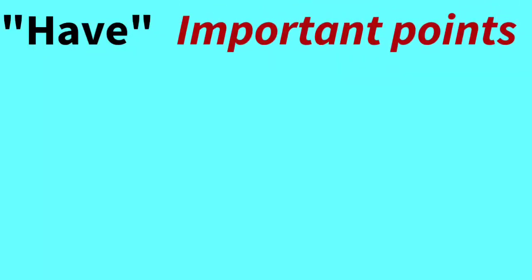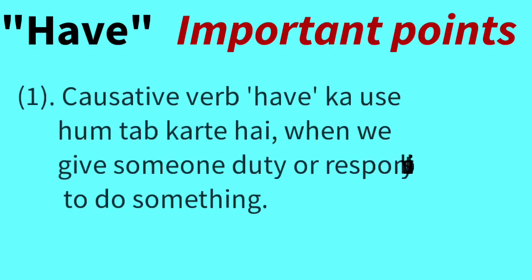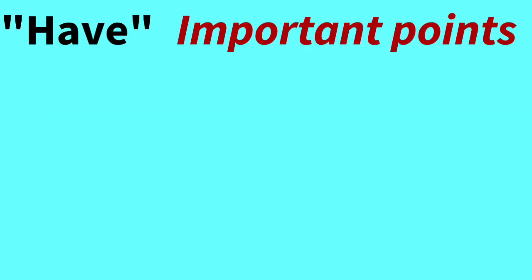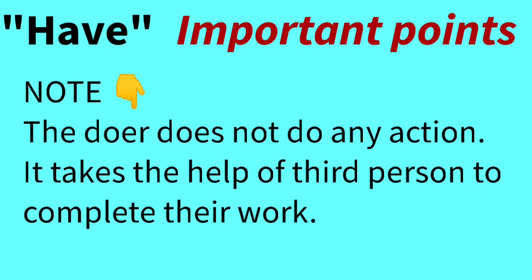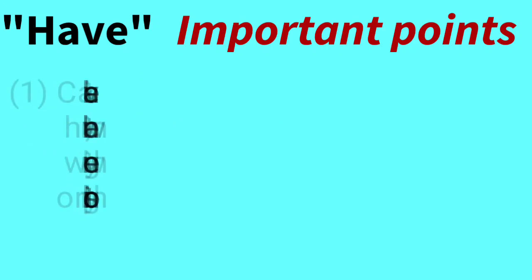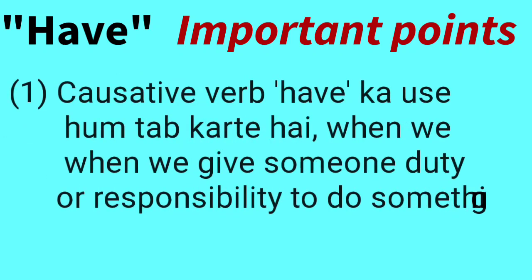There are some points that we will remember. The first point is: we use the causative verb 'have' when we give someone a duty or responsibility to do something. When we give someone a duty or responsibility to do something, the work is assigned to a third person — it is like assigning a responsibility or order for someone else to do something.